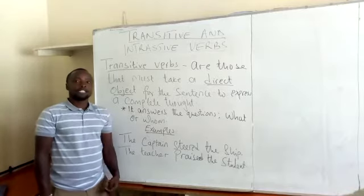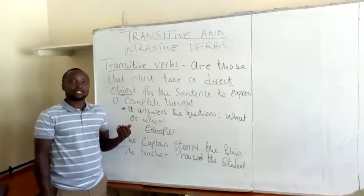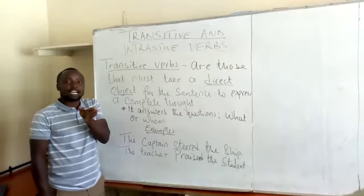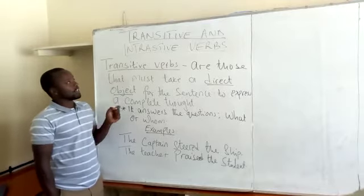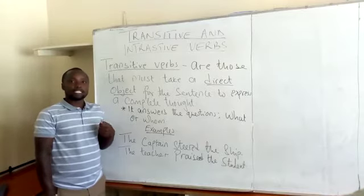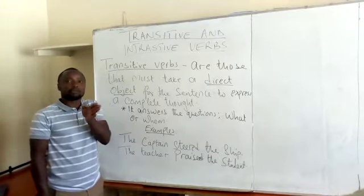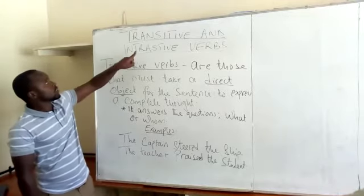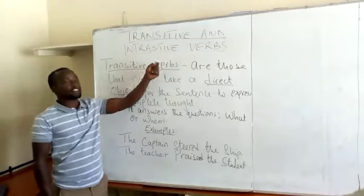Now, in sentences, there are those sentences that will communicate a complete thought without requiring any noun — we call it an object — after the verb. And there are those sentences that, to make a complete meaning, the actual verbs must be followed by a noun. And that is what we are using to talk about transitive and intransitive verbs.